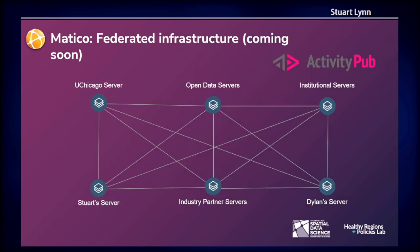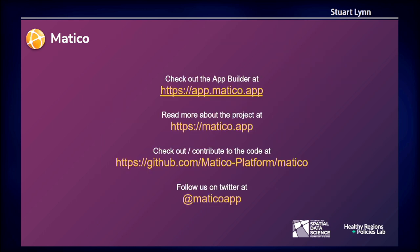Eventually, we're hoping to make that self-hosted system federated, so that my application server, your application server, and anybody else's, through a process called ActivityPub, can exchange things like compute nodes, applications, layers, and datasets all across the internet. We're in alpha stage right now. You can check us out at app.maticoapp to start building applications, sharing them, and playing around with them — this is the first time we've been sharing that application. You can see more at matico.app, and all of our code is open source on GitHub, so feel free to reach out and contribute. Thanks.